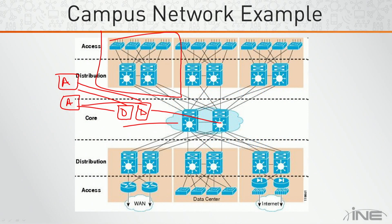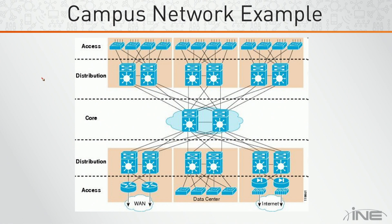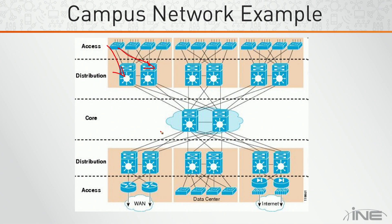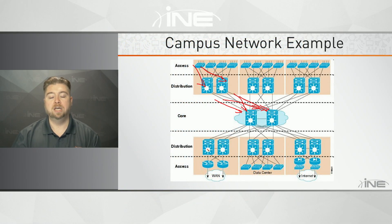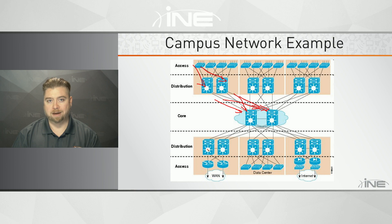For example, if we take this campus network and run Layer 2 switching everywhere, from this access switch the port on the left is the root port and the port on the right is the blocking link. That means the distribution switch on the right is sitting and doing nothing from access switch 1's point of view. What we want is to forward traffic in both directions — left and right — and use all four links between distribution and core. We don't want 10-gig, 40-gig, or 100-gig ports forwarding no traffic, just waiting for a failure before they become active.